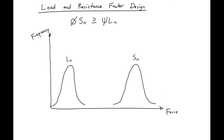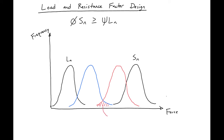The goal of our load and resistance factor design is that we have our factored load and our reduced strength. The region where these overlap represents our risk of failure, or probability of failure.